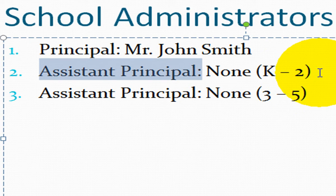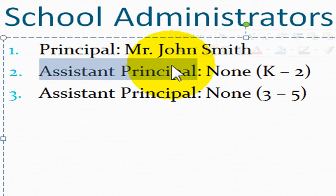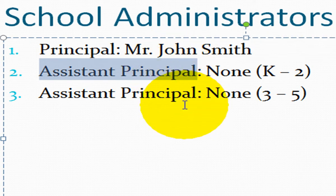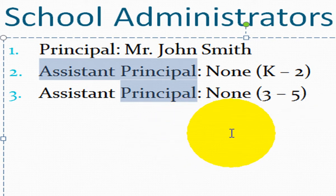You can also use your control key to select information. With the first information selected, hold down your control key on your keyboard and select information somewhere else in your placeholder. Simply let go of your mouse and the control key.